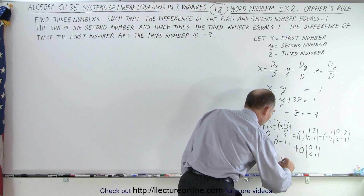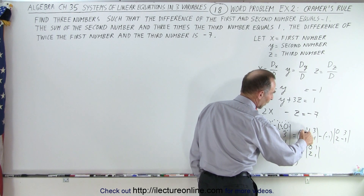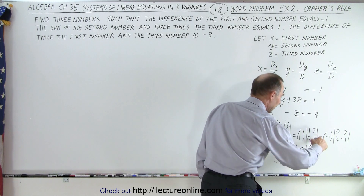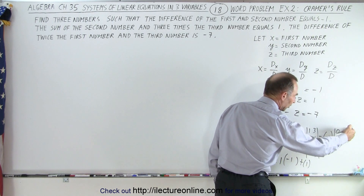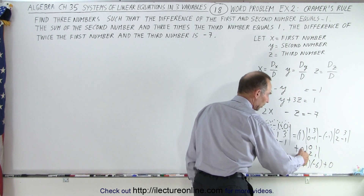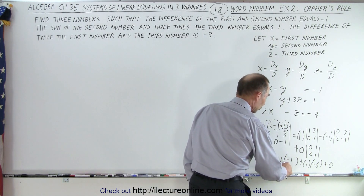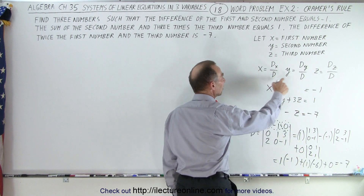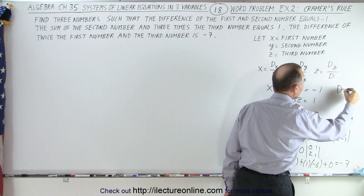Working it out: 1 times (1×(−1) − 0×3) gives negative 1. Then minus times negative 1 times (0×(−1) − 3×2), which is minus times negative 1 times negative 6, giving minus 6. The third term is zero. So D equals negative 1 minus 6, which equals negative 7. We write down D equals negative 7.